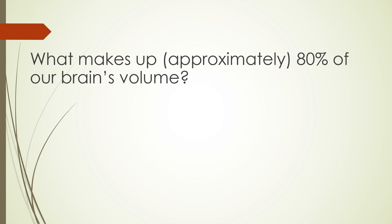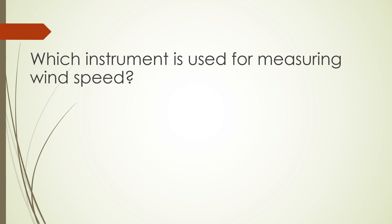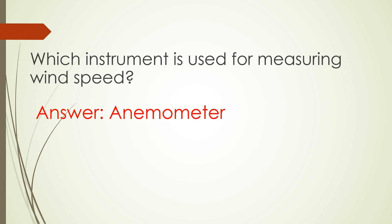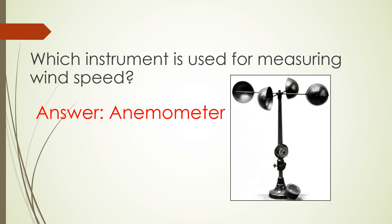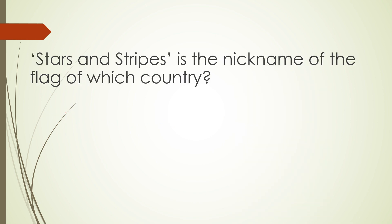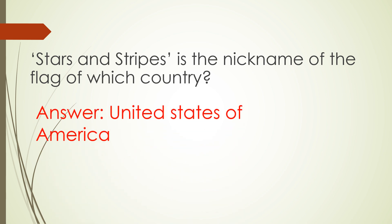What makes up approximately 80% of our brain's volume? Answer: water. Which instrument is used for measuring wind speed? Answer: anemometer. Stars and Stripes is the nickname of the flag of which country? Answer: United States of America.